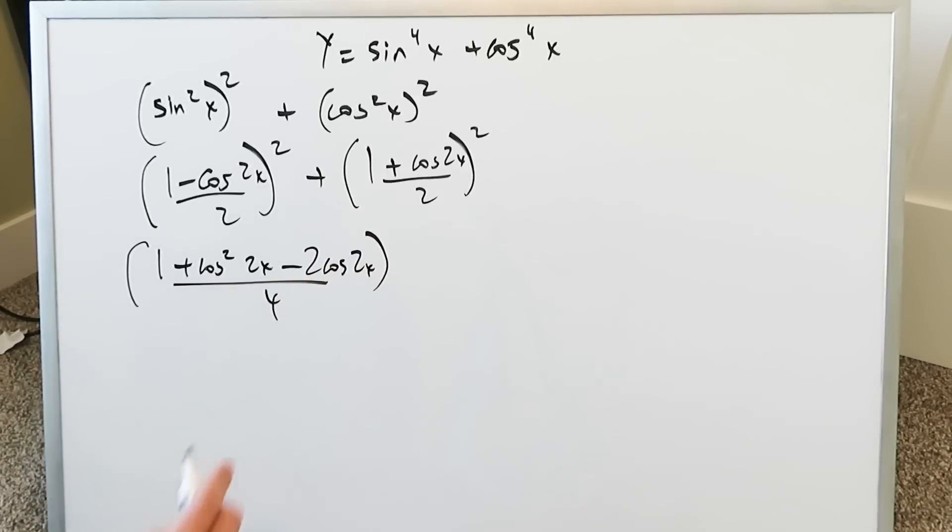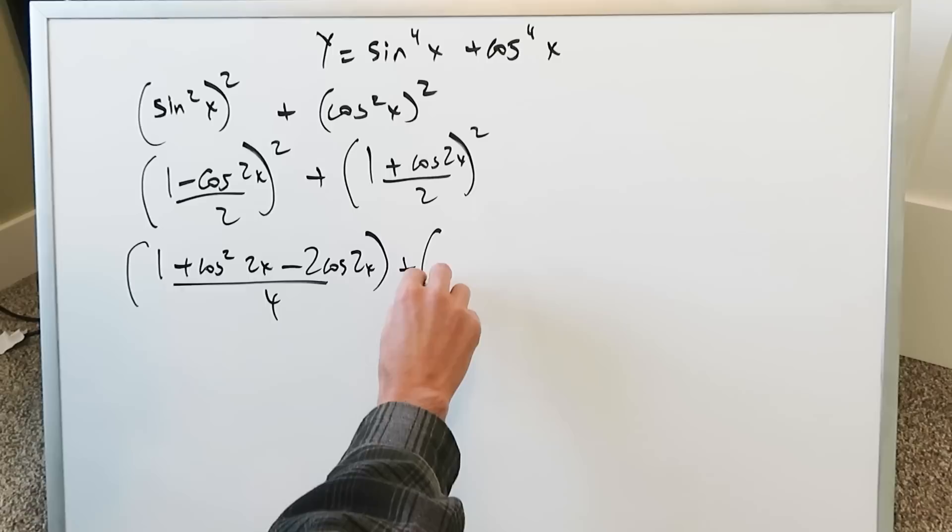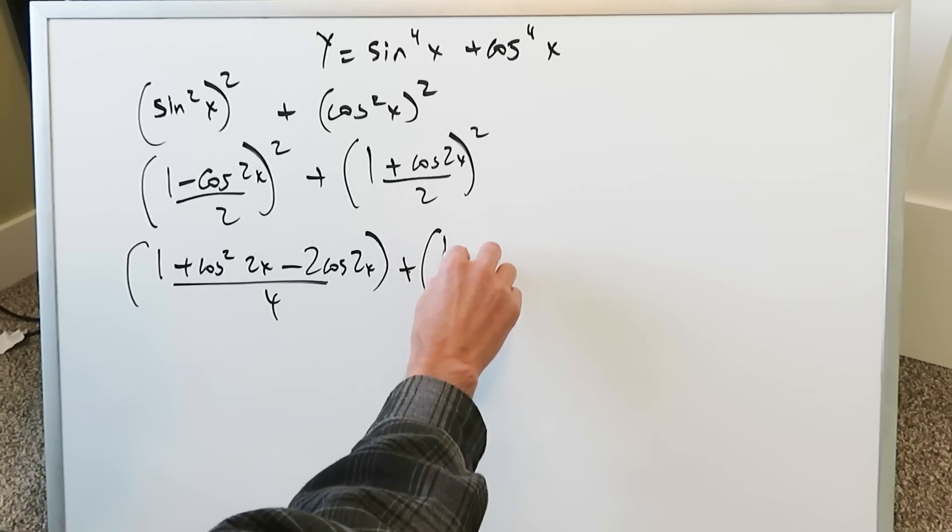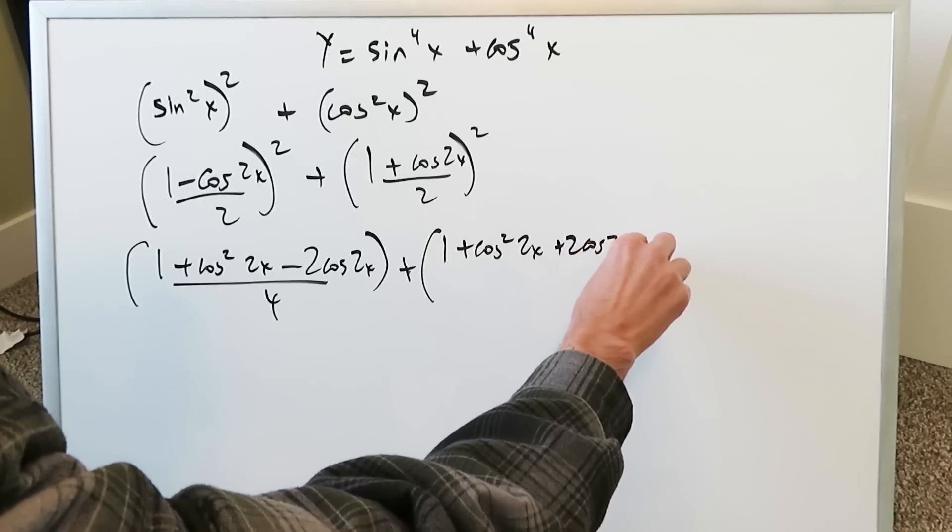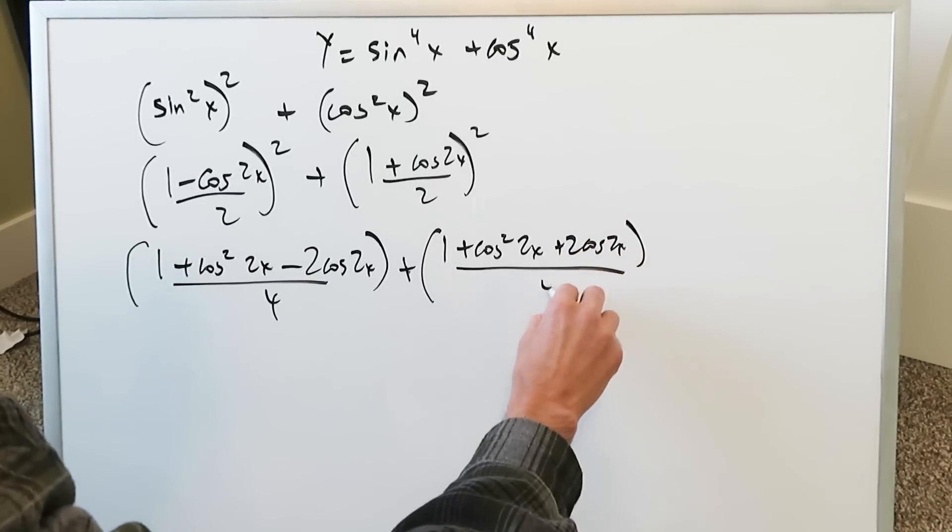This is all over a 4. Likewise you just have to expand this out but you have to do it carefully. You'll have a 1 plus cosine square 2x plus 2 cosine 2x all over a 4.